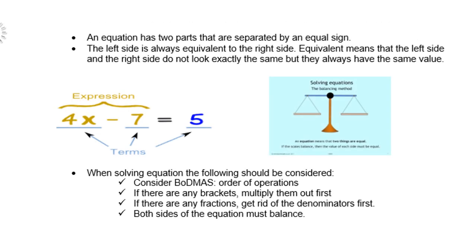An equation has two parts that are separated by an equal sign. The left side is always equivalent to the right side. Equivalent means that the left side and the right side do not look exactly the same, but they always have the same value.